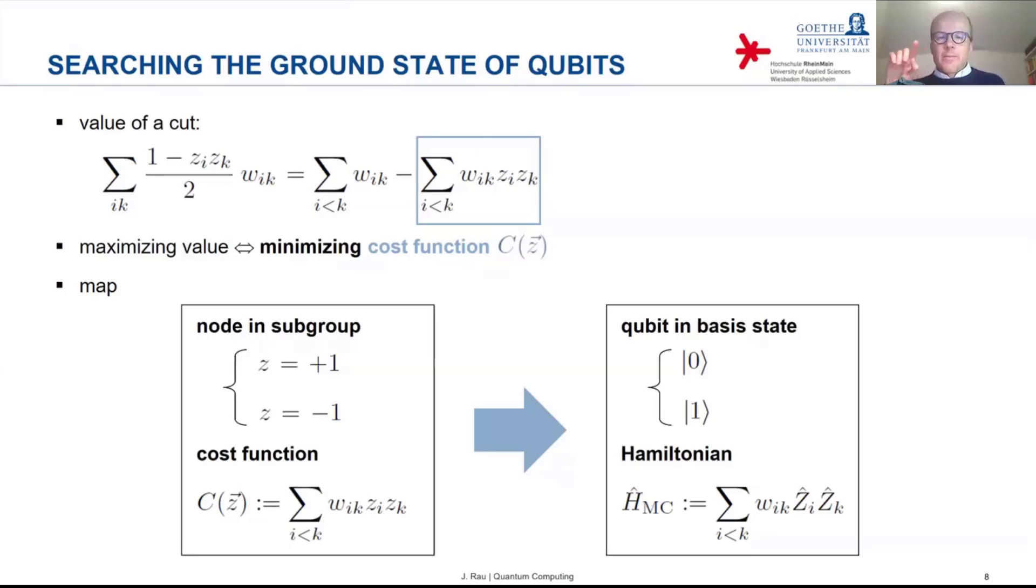So the basis state of all the qubits. So the composite state of all the qubits is an eigenstate of this Hamiltonian. And the eigenvalue is exactly equal to the cost function that you have on the left hand side.